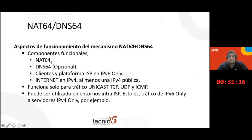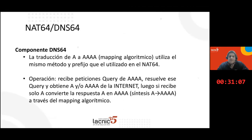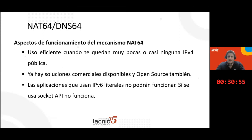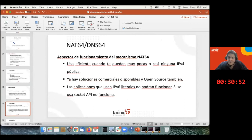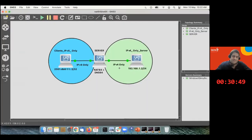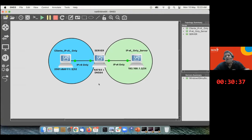We already mentioned the components: NAT64 and DNS64, which is optional but generally they go hand in hand. Now I will move to the practical part since the theory has been covered. The demo works better than a thousand words. Here I have GNS3, which is an emulator running real Linux hosts. I'll explain the network topology: on the left I have a client that is IPv6 only, and this is an IPv6-only link.